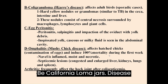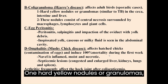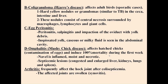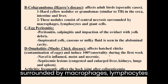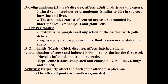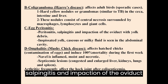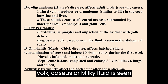B. E. coli Granuloma (JARS Disease) affects adult birds in sporadic cases. 1. Hard yellow nodules or granulomas similar to TB in the cecum, intestine and liver. 2. These nodules consist of central necrosis surrounded by macrophages, lymphocytes and giant cells. C. Egg Peritonitis: peritonitis, salpingitis and impaction of the oviduct with yolk debris. Inspissated yolk, caseous or milky fluid is seen in the abdominal cavity.